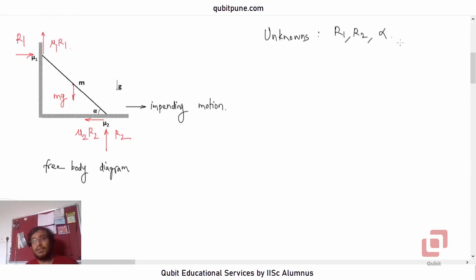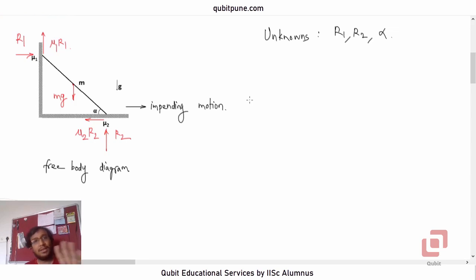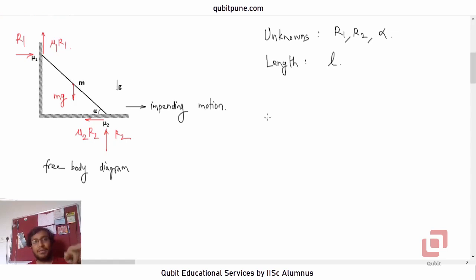In this system there are three unknowns: the reactions R1 and R2, and the angle alpha which we want to find. The length L of the rod is also unknown, but as we shall see it will cancel out in the solution. Let us assume the rod has length L. We set this contact point as the origin, with x-axis horizontal and y-axis vertical.